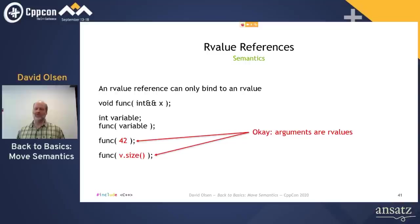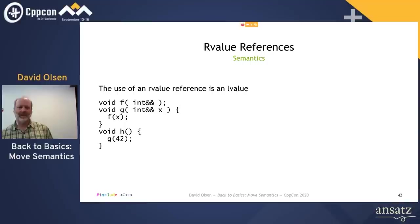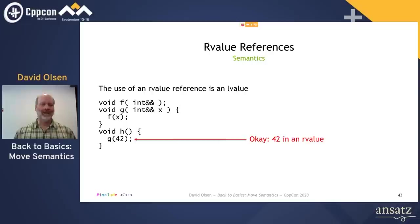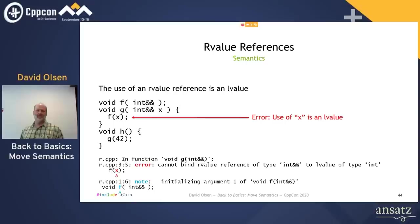Remember, R-value references can only bind to R-values. Now, what happens when we use an identifier that was declared as an R-value reference? This is counterintuitive — the use of an R-value reference is an L-value, not an R-value. Both F and G take an R-value reference to int parameter. When we call G with an R-value, the literal 42, all is good. But when we pass G's R-value reference parameter to F, that's a compile error, because the use of the parameter is an L-value, as shown in the error message from GCC: 'Cannot bind R-value reference of type int&& to value of type int.'